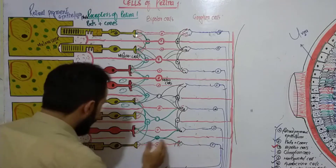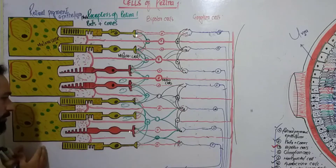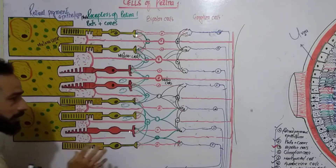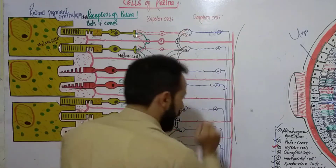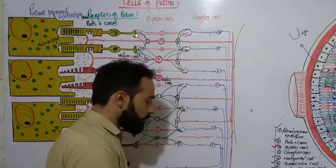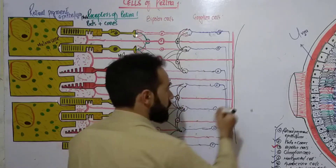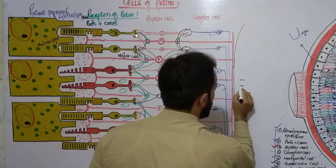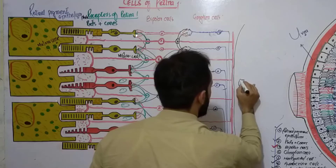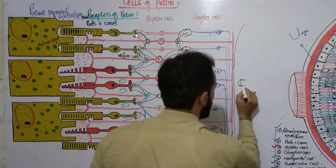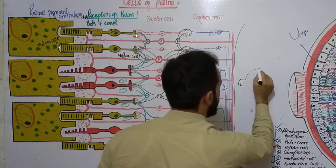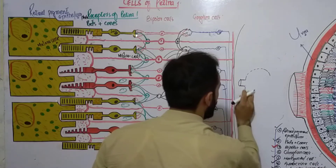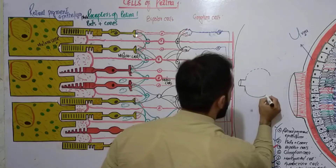Now let's go from the outer part to the inner part and discuss the layers of the retina. Here is a small representation of the retina. As we know, this is our optic canal, this is the optic disc, and from here the sclera goes anteriorly. So this is our sclera.